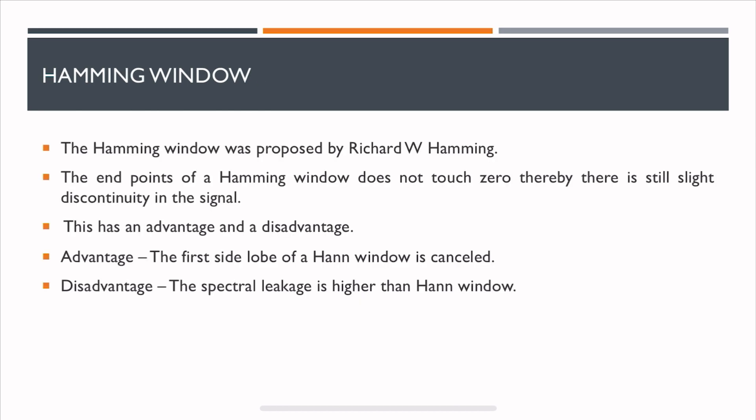The next is a Hamming window. The Hamming window is proposed by Richard Hamming. The endpoints of this window do not touch zero, so there is slight discontinuity in the signal. In comparison to Hann window, the endpoints touch zero and there is no discontinuity at all.